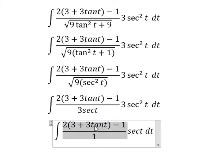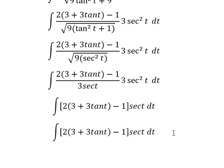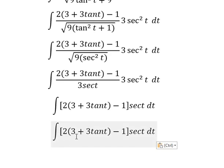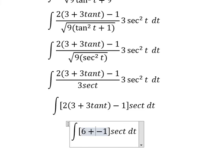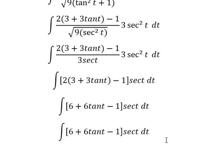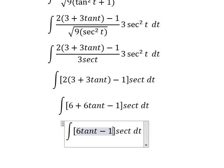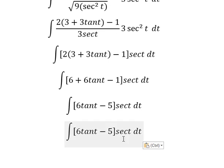Now this is multiplied by sec(t), and combining powers: 6 minus 1 gives us 5. So we have sec⁵(t) multiplied by tan(t), with a coefficient of 3.